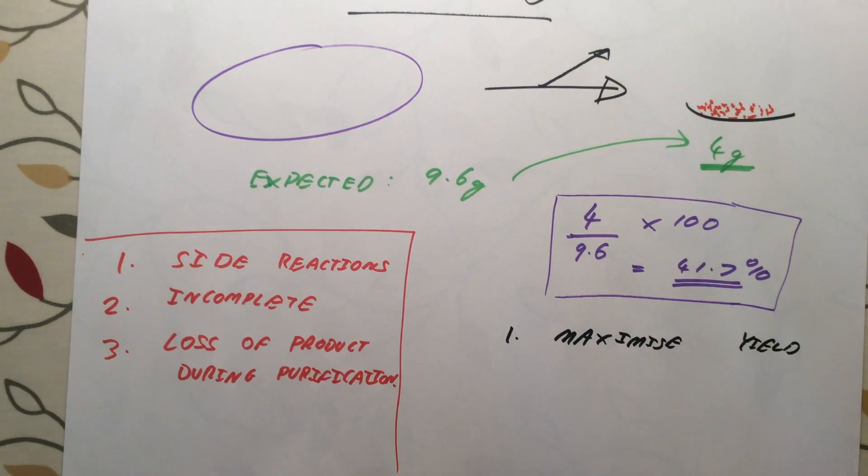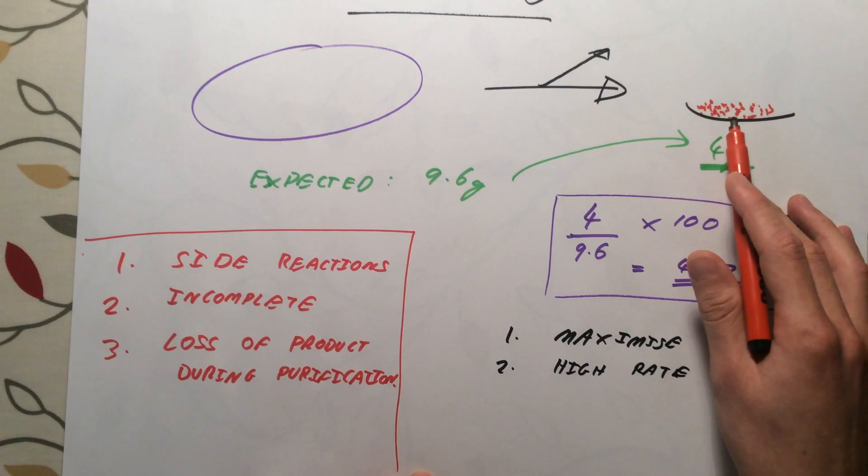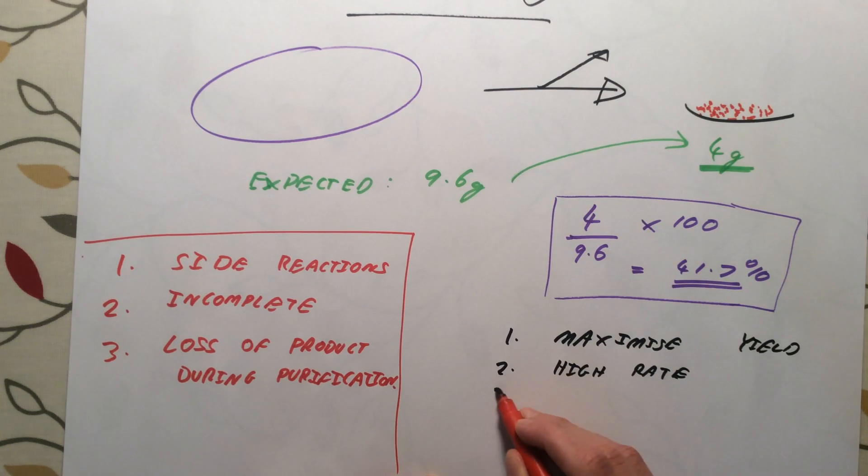Second, they want a high rate of reaction. You want a nice fast reaction. There's no point having a reaction that takes a year to make anything useful even if the percentage yield is 100%. It's pointless unless the rate is high enough to be able to make it commercially viable.